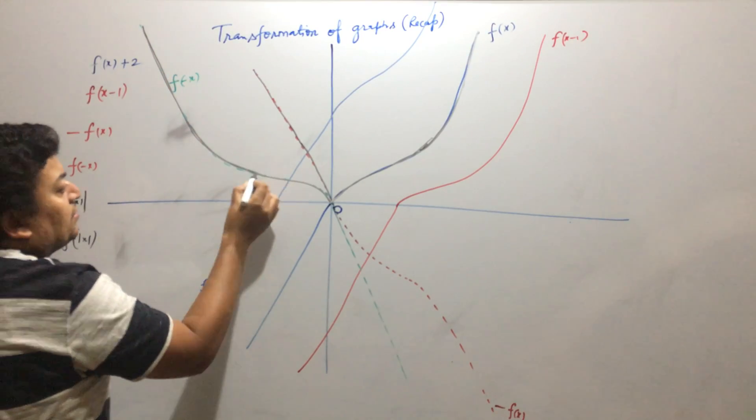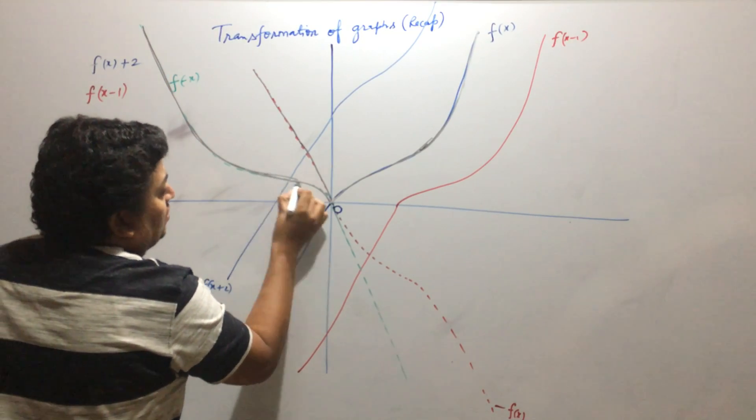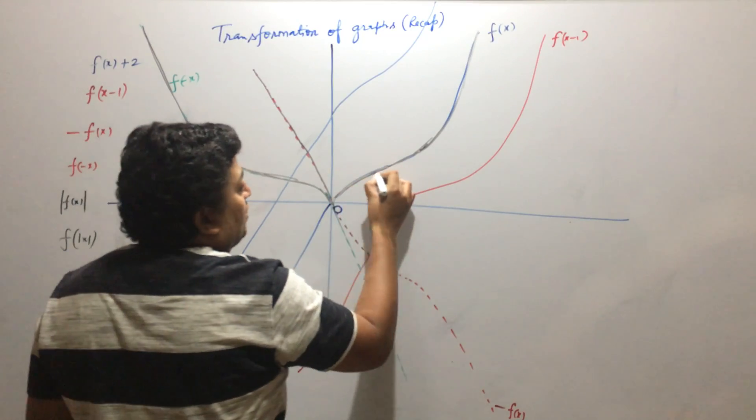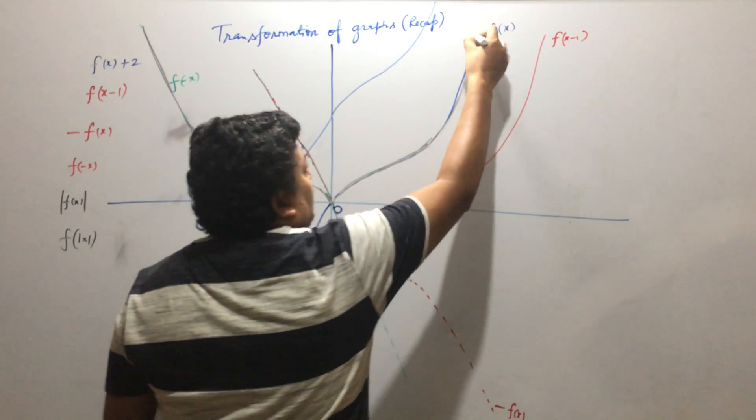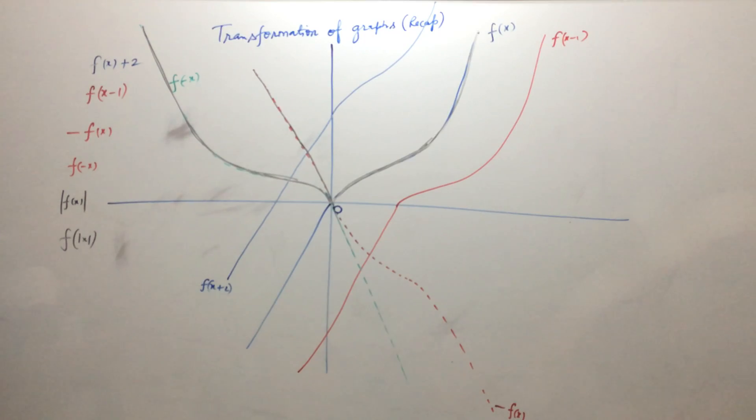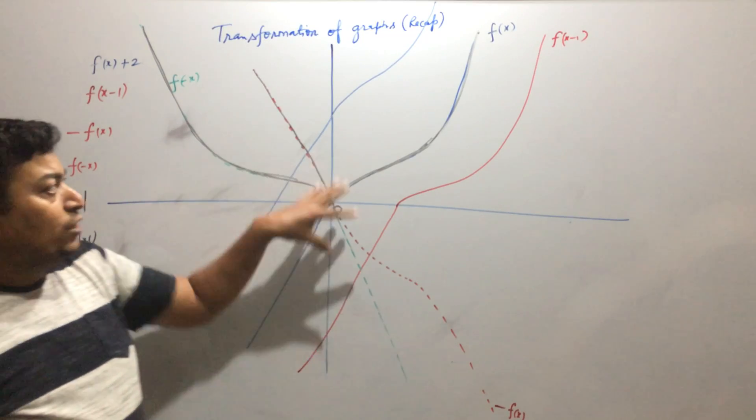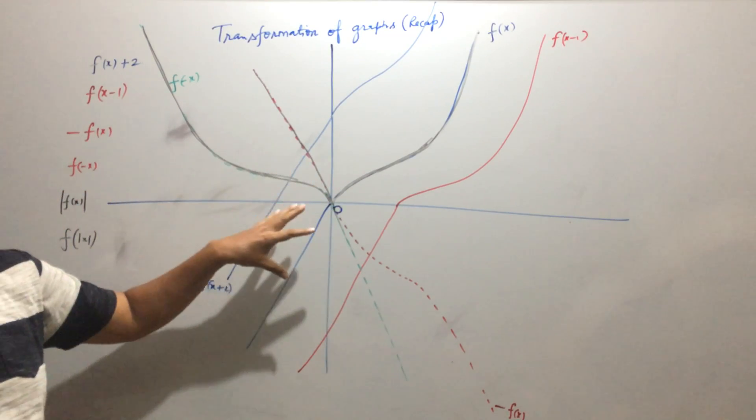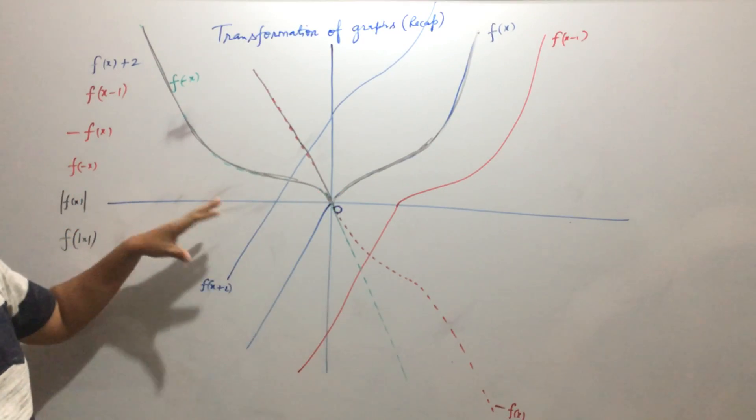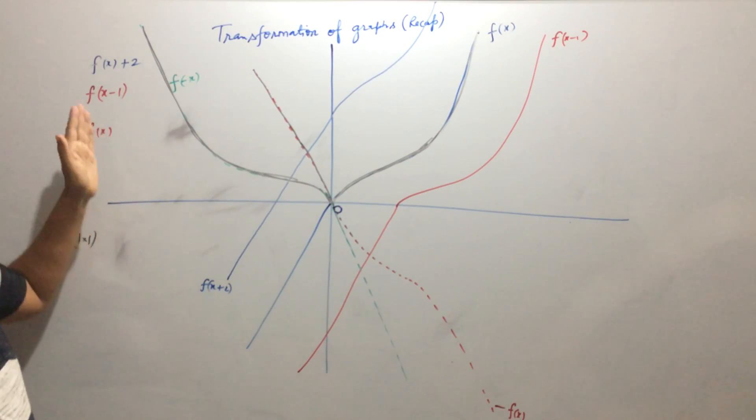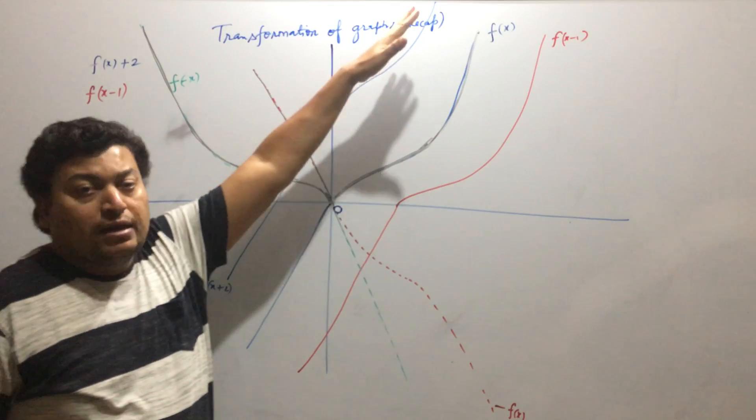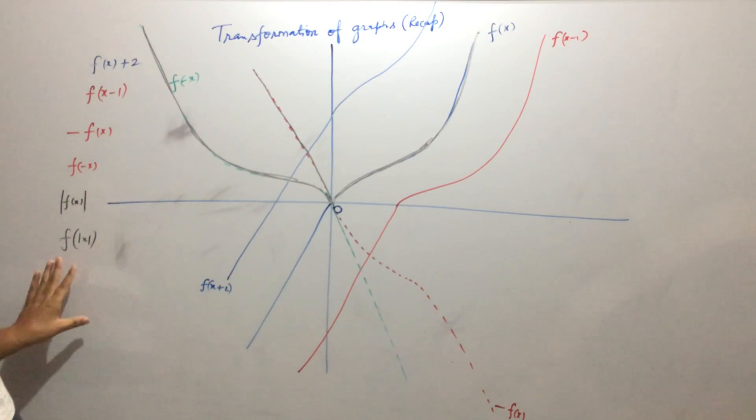I can't label it because this graph is already having some parts common with other graphs. But whenever you try to understand how the graph was drawn, you can go back to the video and then see the movement of my pen and you understand how the graph has been drawn.